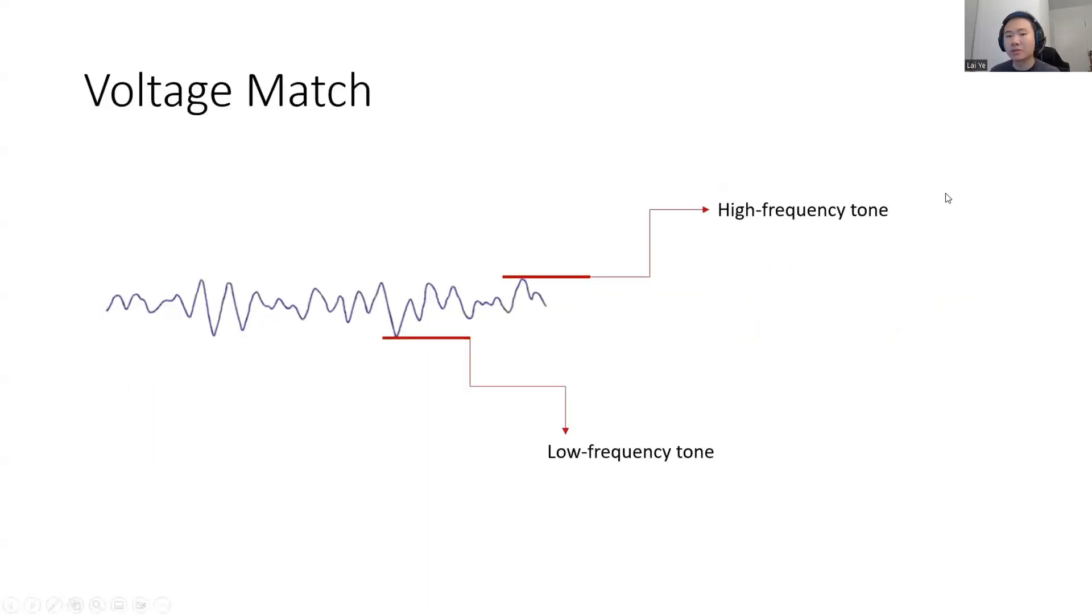Another way to do it is to match the instantaneous voltage of the EEG to the frequency of a beep. Namely, the higher the voltage, the sharper the beep. And here, I will show the effect of this algorithm.